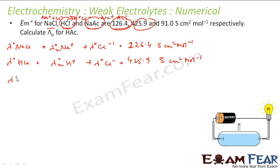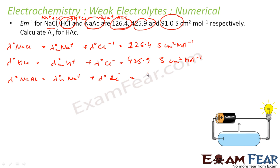Similarly, λM⁰ of NaAc is nothing but λM⁰ of Na⁺ plus λM⁰ of Ac⁻, and that is given as 91.0 S cm² per mol. This is equation 1, this is equation 2, and this is equation 3.